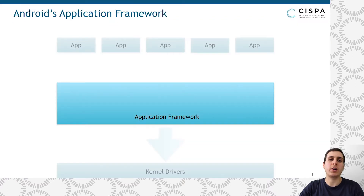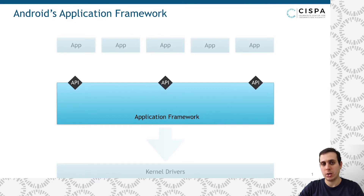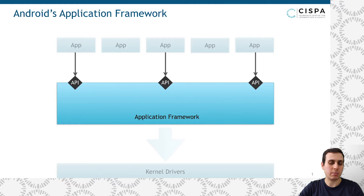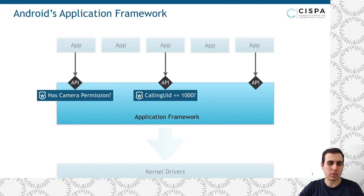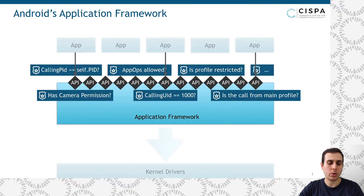The application framework is a massive code base that exposes a wide range of features in the form of APIs. Those APIs are accessed by app processes over IPC. There is a security and privacy risk, and therefore the application framework acts as a reference monitor and protects those APIs with permissions, explicit checks on the calling Linux user ID, or other checks.